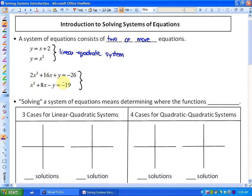In this next system here, there's two equations. They're both quadratics because they both have the squared here. This would be considered a quadratic quadratic system.